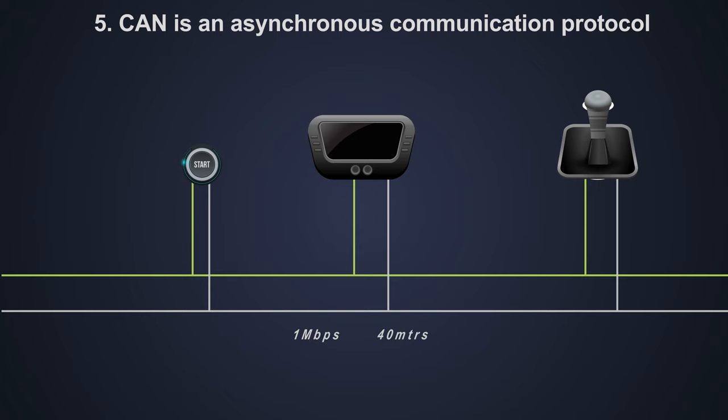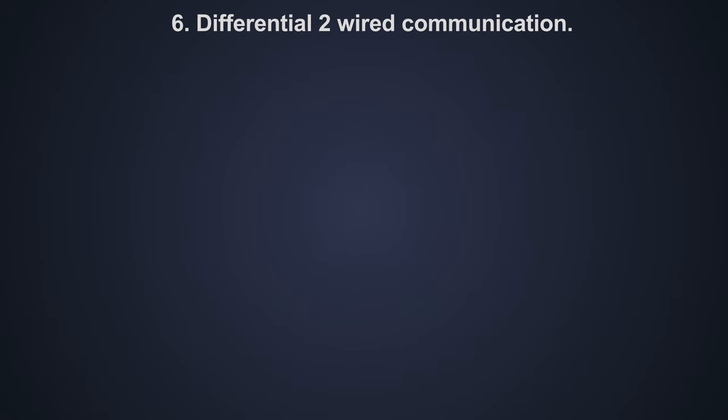There are multiple data rates as well which are 100 kbps, 250 kbps, 500 kbps, etc., which depends on the wire length and characteristics. CAN is a differential 2 wired communication.